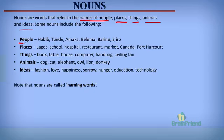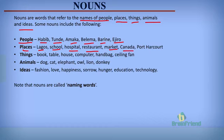First of all, let's look at people — words that name people. For names of people, we have Habib, Tunde, Amaka, Belema, Barine, Ejiro, and so on. For places, we have Lagos, school, hospital, restaurant, markets, Canada, Port Harcourt. These are names of places.